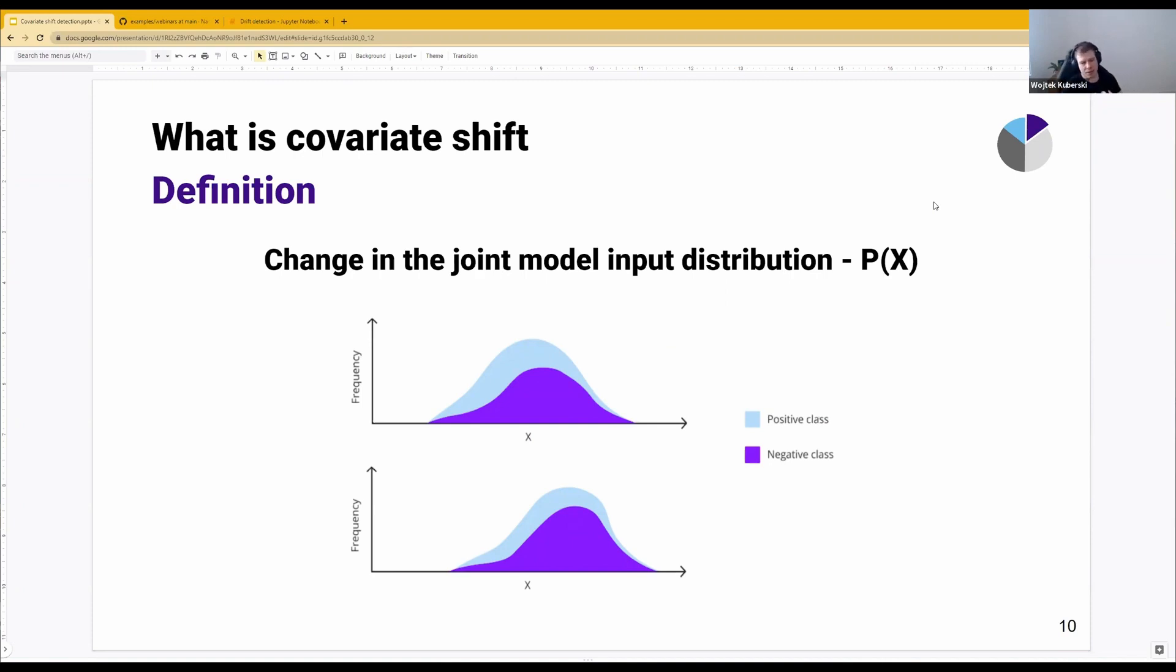To give you a simple example, imagine that we have just one feature. If the distribution that we sample from population, some kind of sampling function, if that sampling function from population to our sample changes, we have covariate shift.